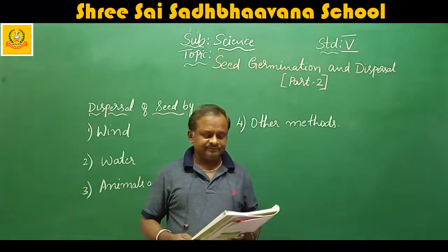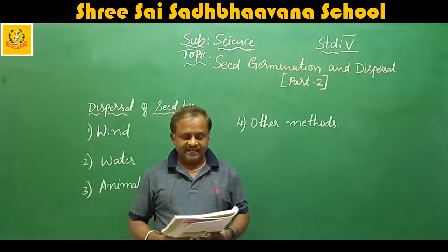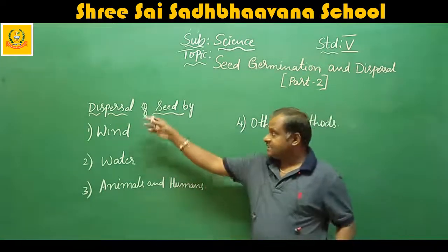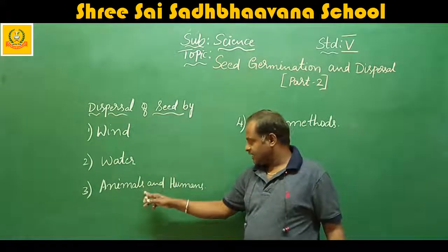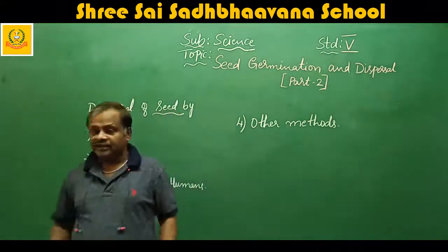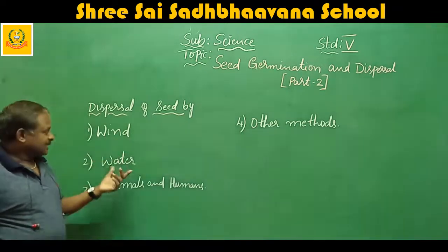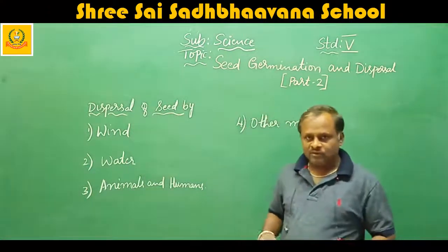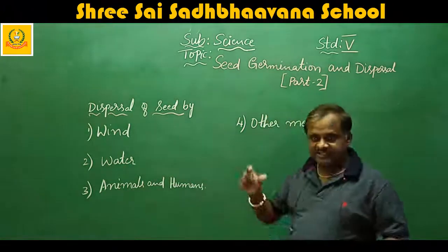On page number 15, dispersal of seed by wind. The dispersal of seed takes place by wind, water, animals and humans, and other methods. These are the four methods of seed dispersal.